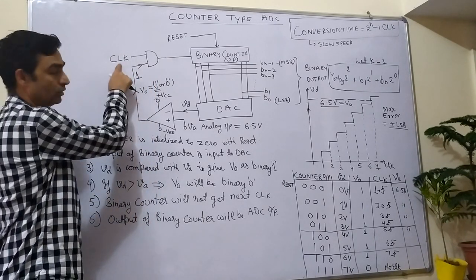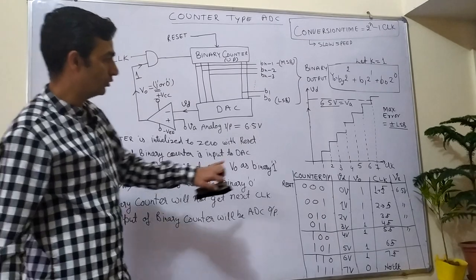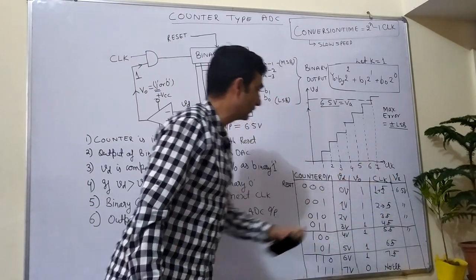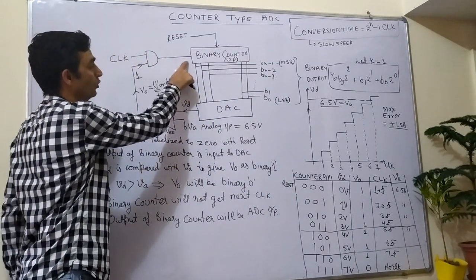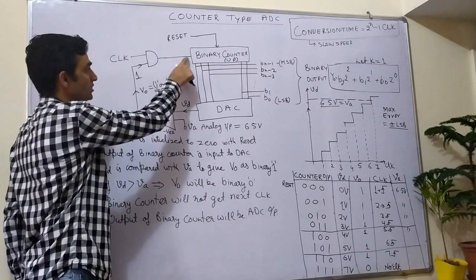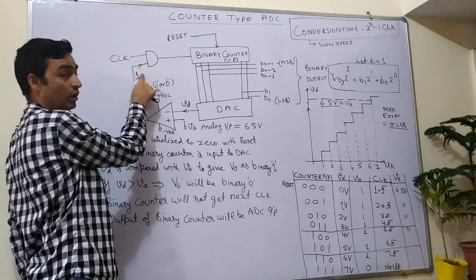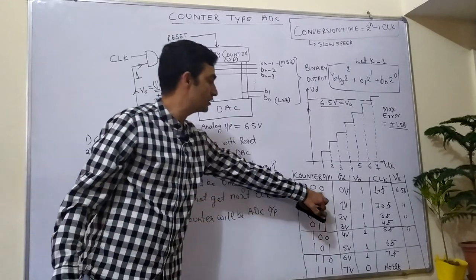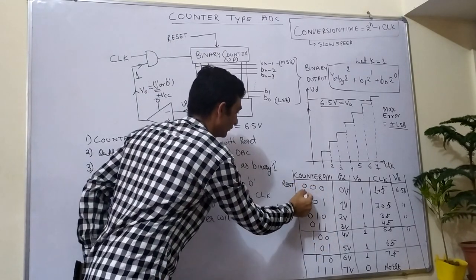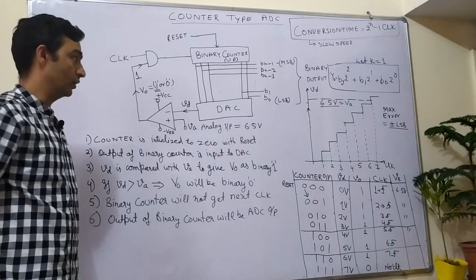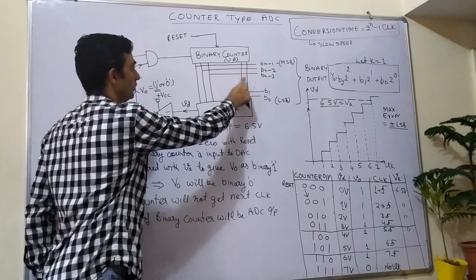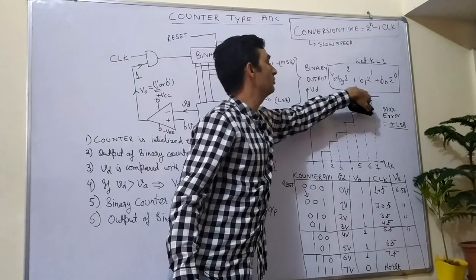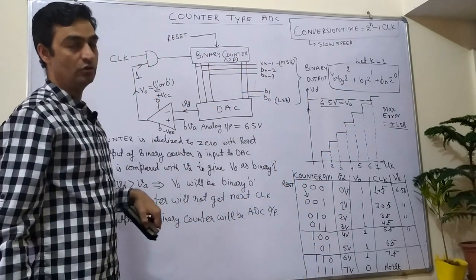Since the comparator output is 1, the clock is gated through and a positive clock edge reaches the binary counter, causing it to count up. The previous state was 000; the new state is 001. With counter output 001, the DAC output = 2⁰ = 1 volt. Comparing 6.5 V (VA) against 1 V (VD): 6.5 V is greater, so the comparator output remains binary 1.